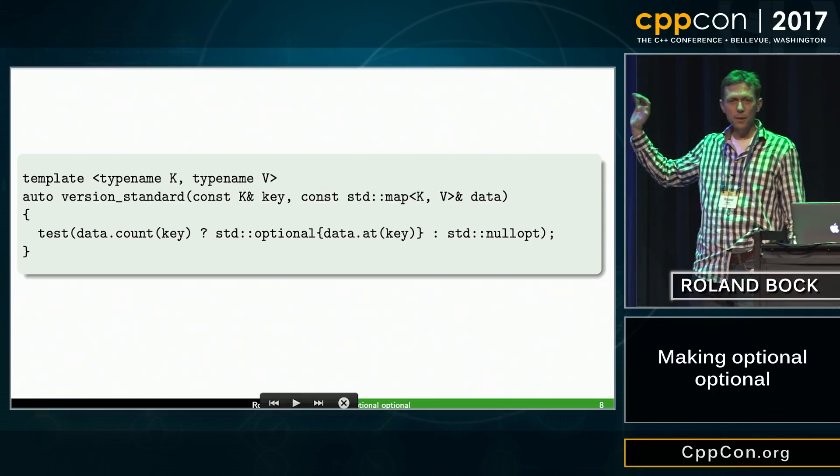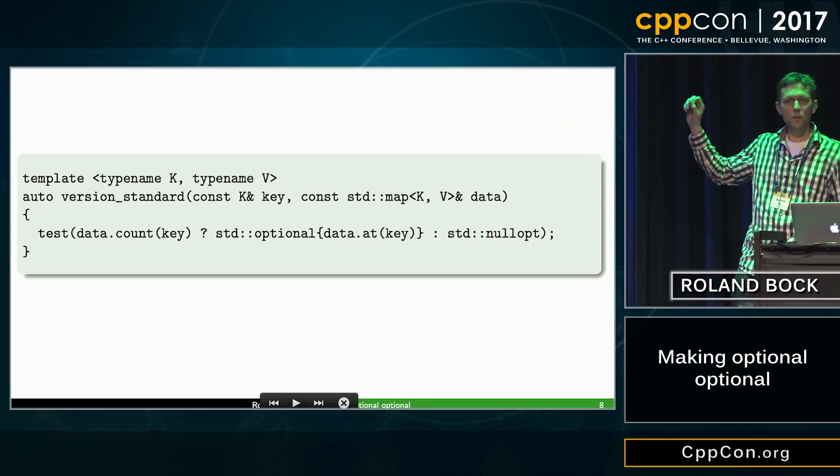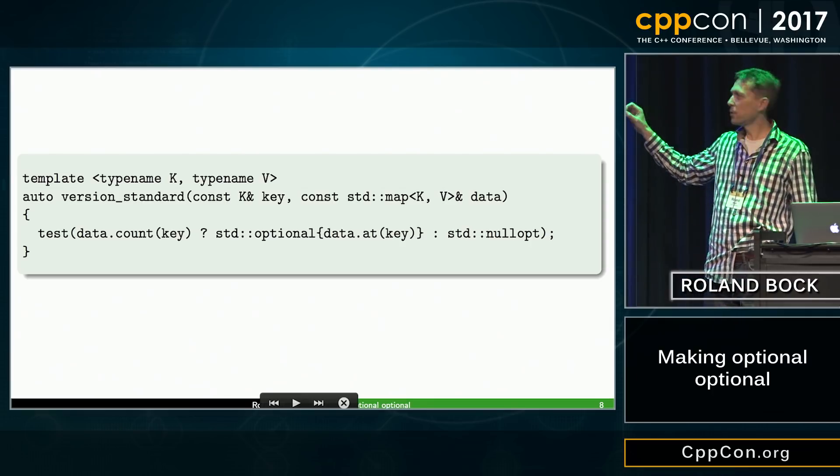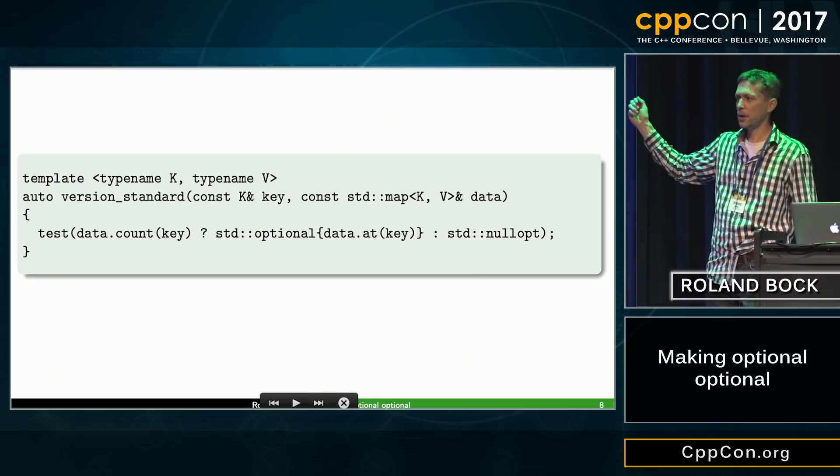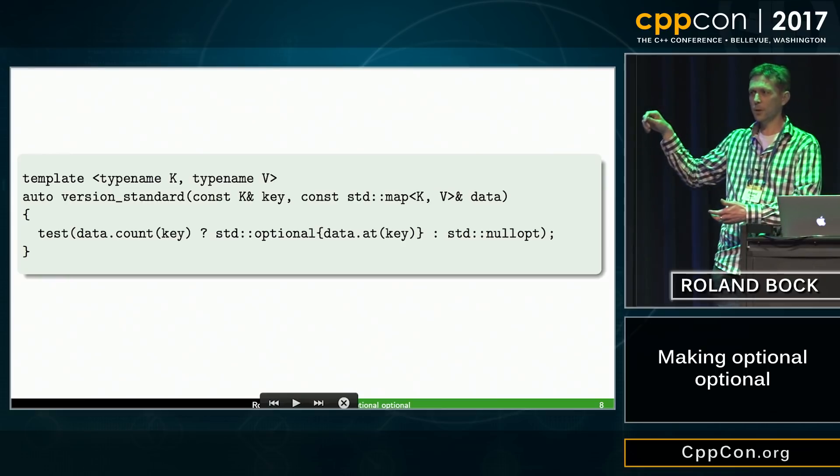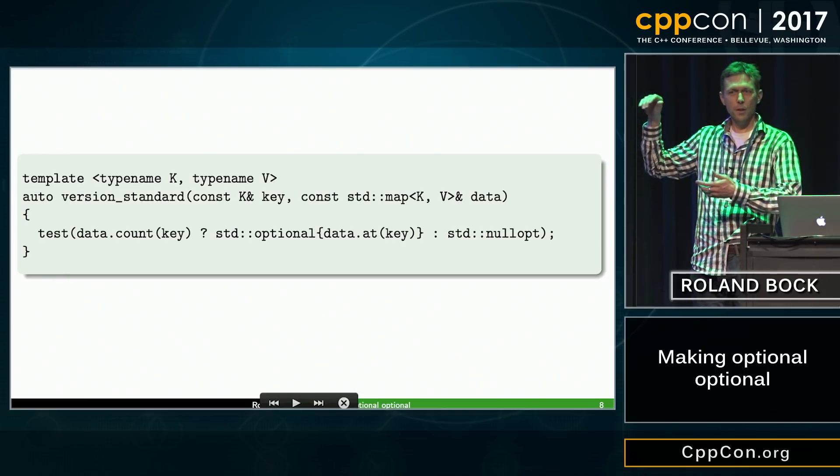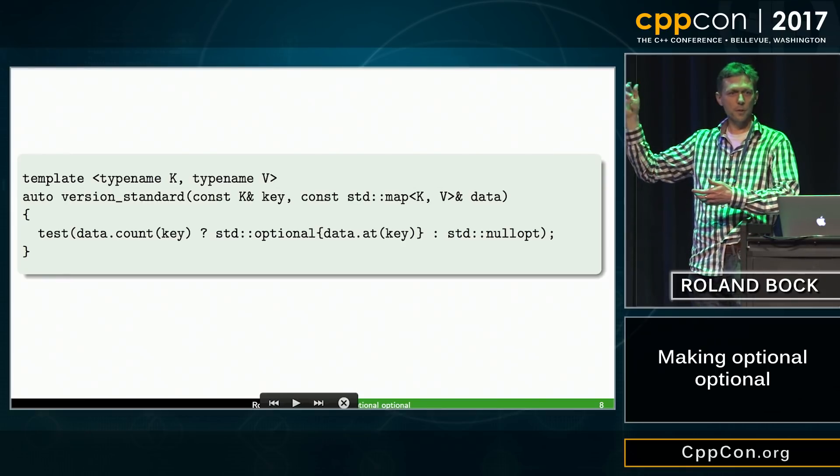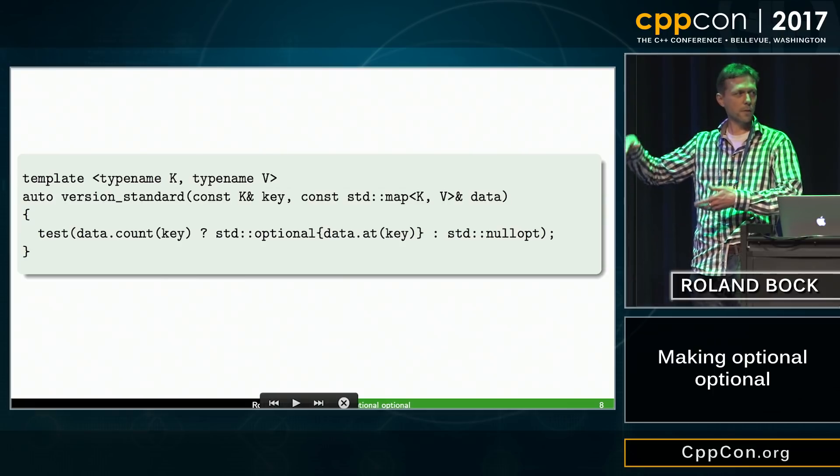So actually, I think that this is the canonical way to create an optional, and I think that the documentation which does this default initialization and then, if there is a value, then assign it, and then pass it,